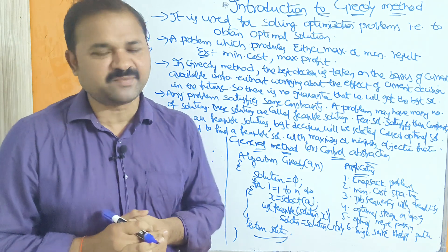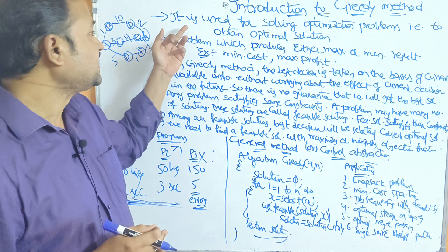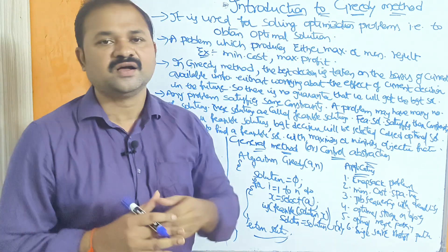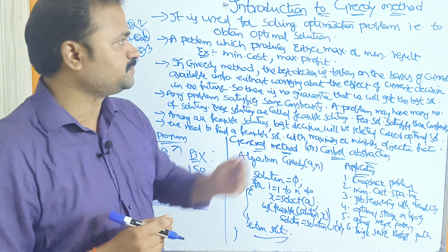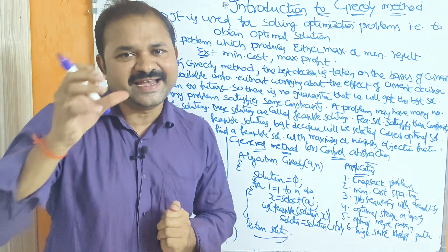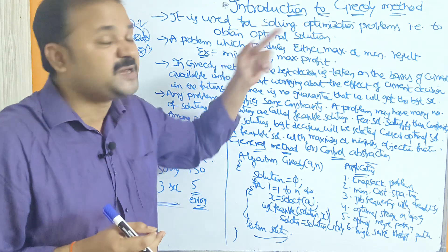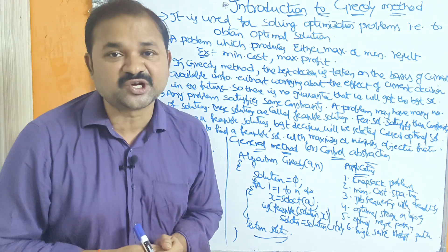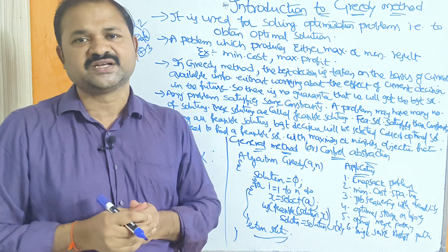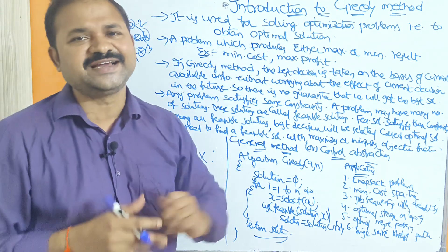Let us discuss the introduction to the greedy method. The greedy method is mainly useful for solving optimization problems — that is, to obtain an optimal solution. By using the greedy method, we obtain the optimal solution, which means the best solution. Out of all the available solutions, in order to find the best solution, we use the greedy method.